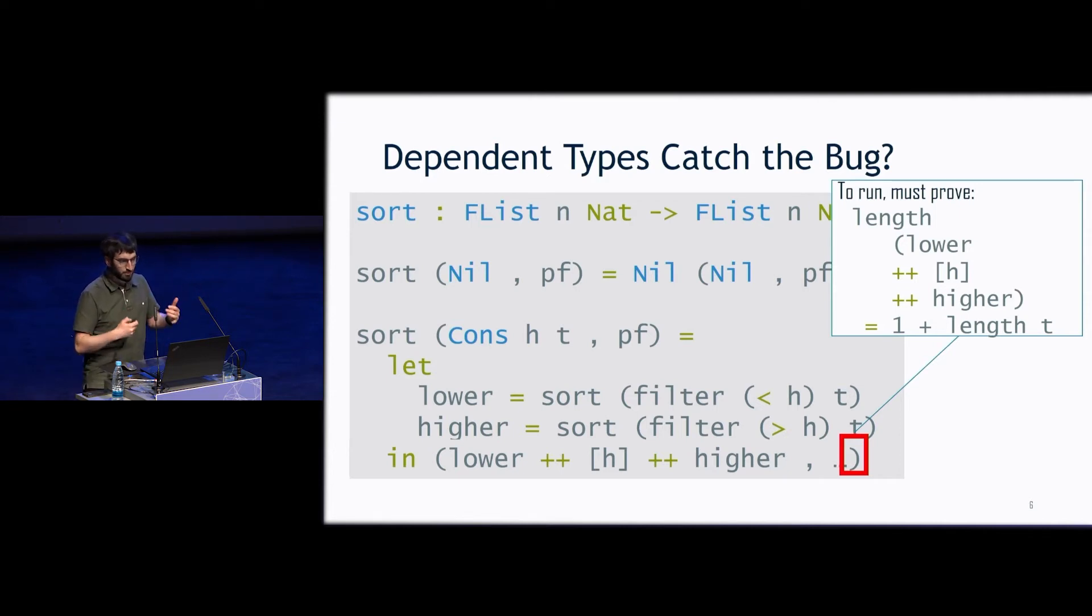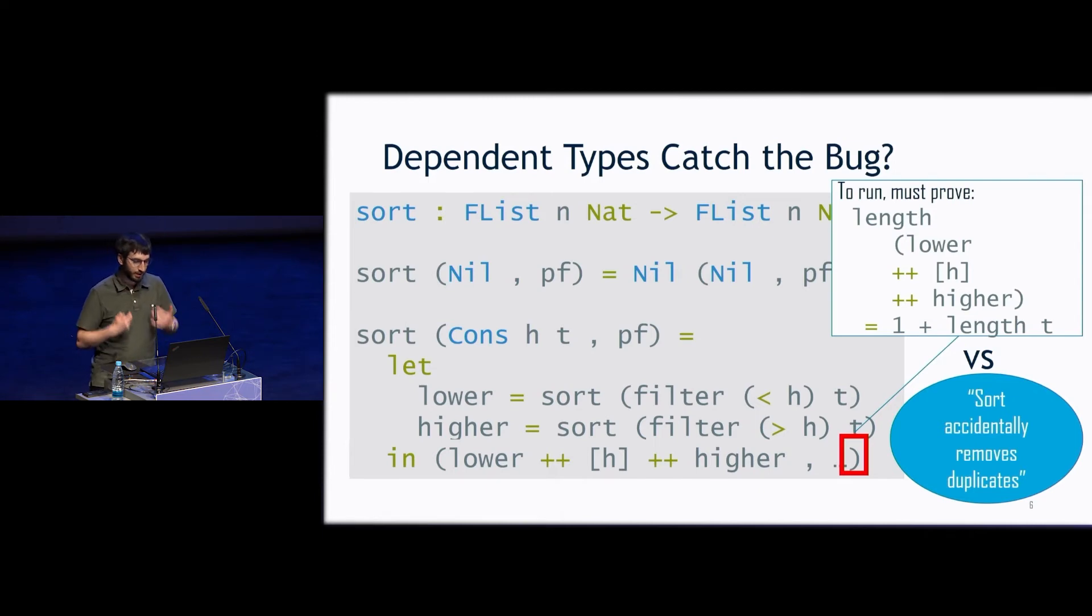It's that the length of doing this filter and then concatenating it back together is the same as the length of the original list. The problem is that there's a conceptual gap between the programmer seeing this and trying to produce a proof of this type, and what the actual problem is, which is that sort is accidentally removing duplicates. These two things don't look the same, and the programmer might try to fill this goal. They're never going to be able to because of the bug. But the compiler isn't giving them any feedback saying that this is impossible. The only feedback they get is the difficulty they encounter trying to build an impossible proof.